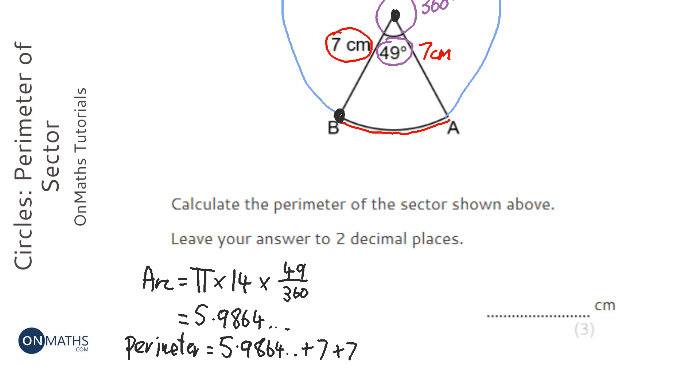So I'm going to add 7, add 7, and it gives me 19.9864, and so on. So to two decimal places, that's going to be 19.99 because that 6 moves that 8 up to a 9.